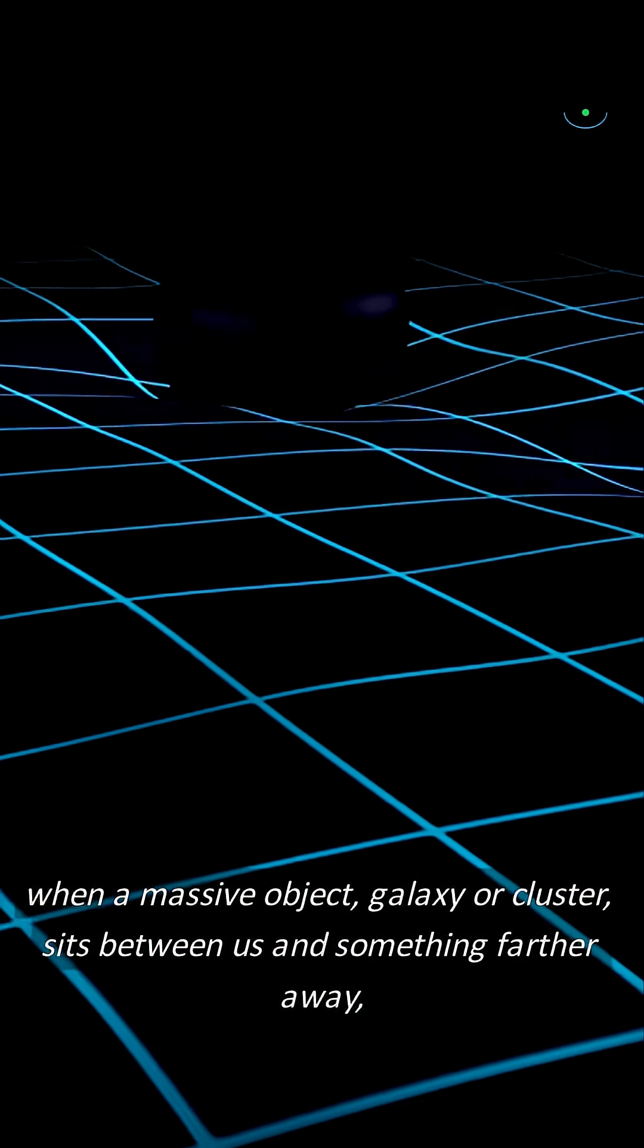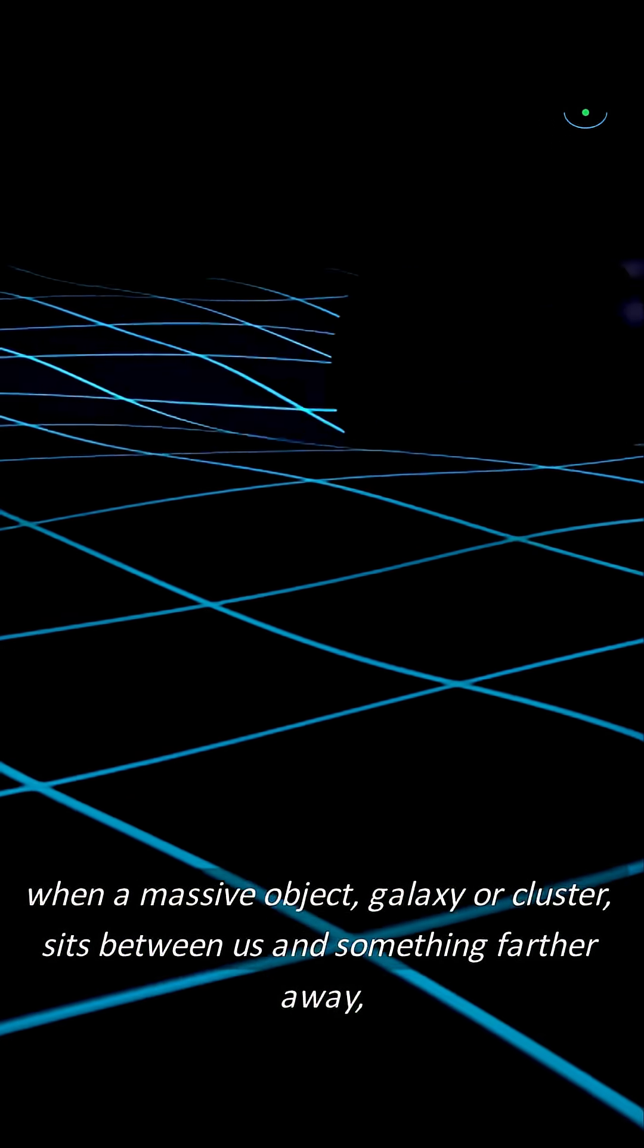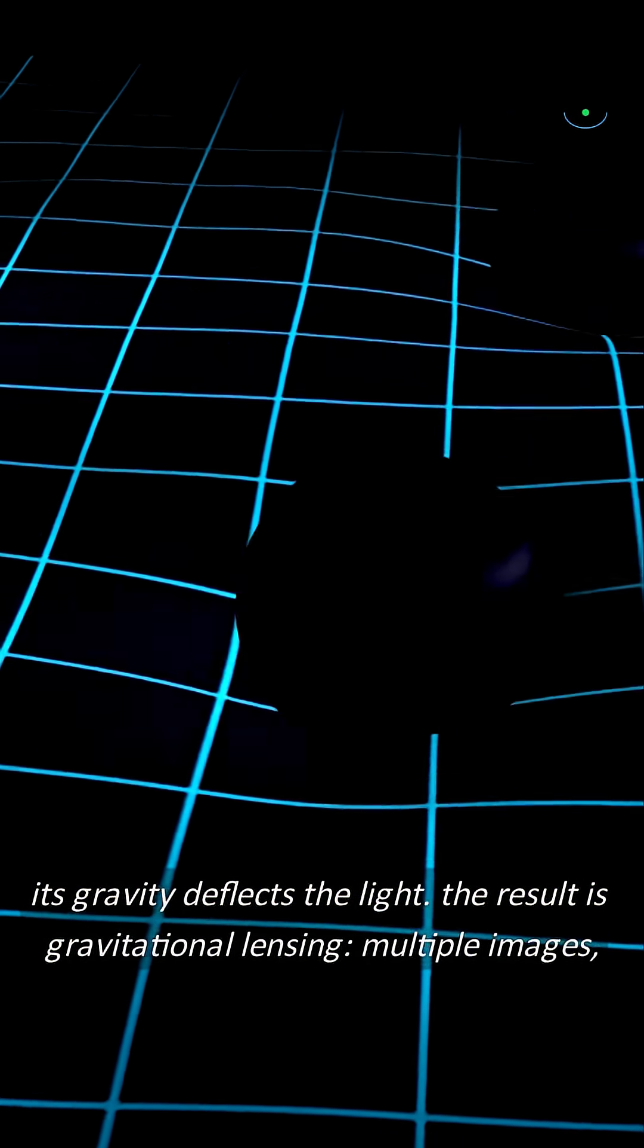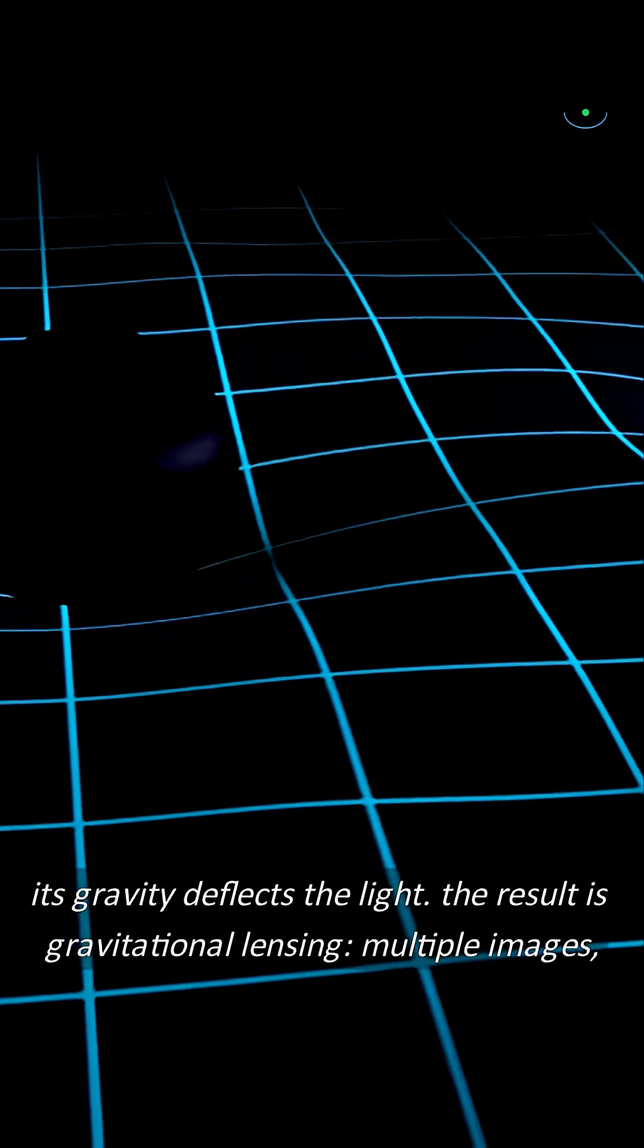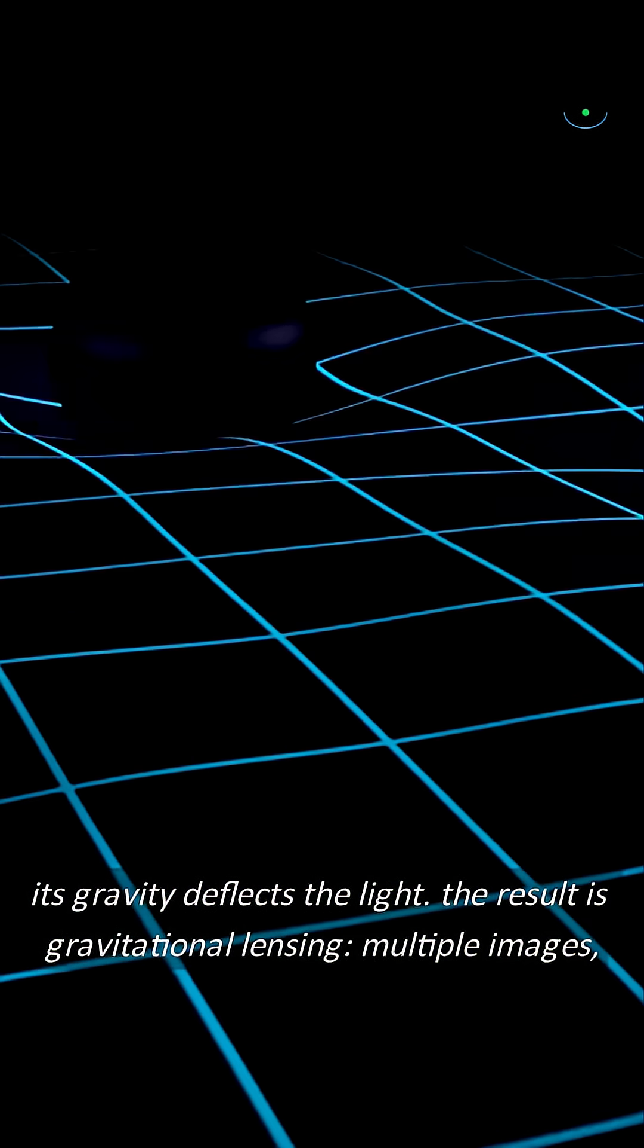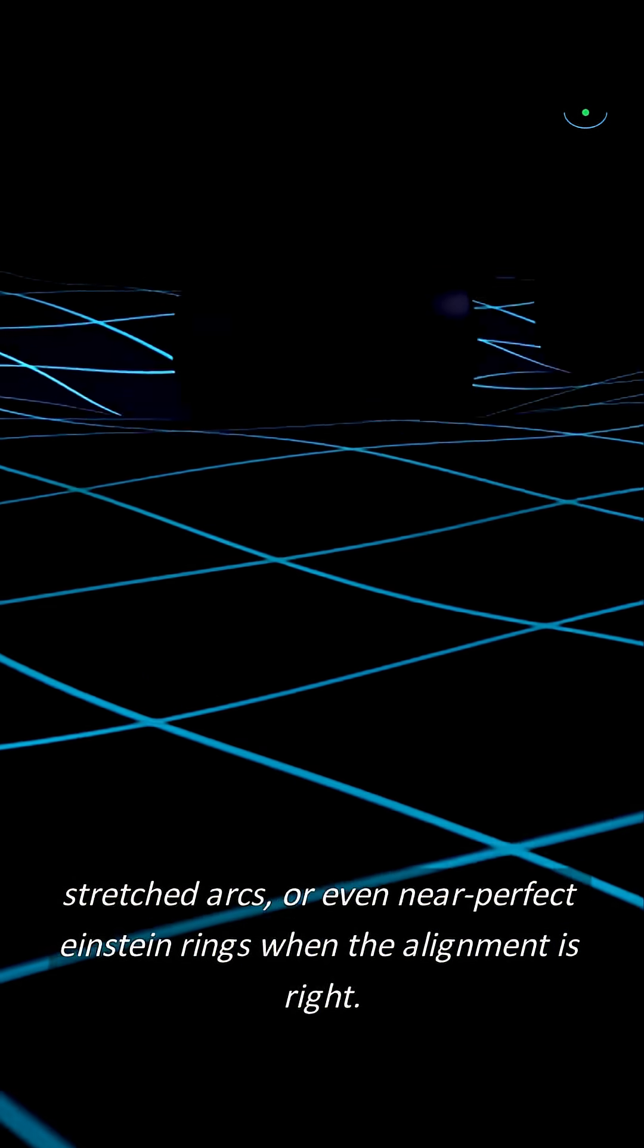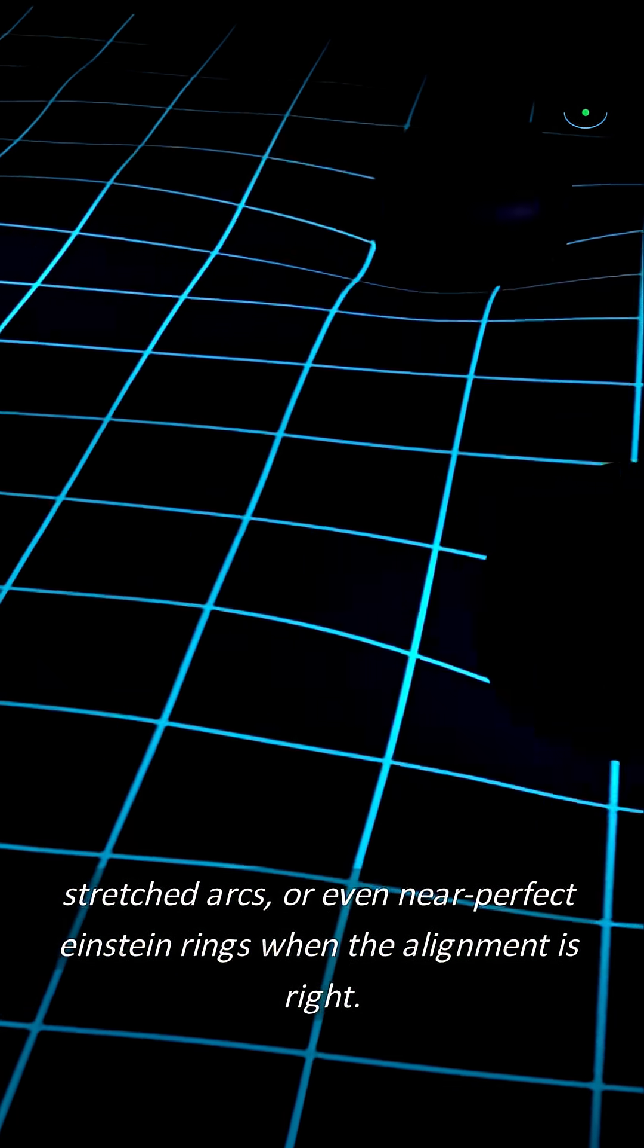When a massive object, galaxy or cluster, sits between us and something farther away, its gravity deflects the light. The result is gravitational lensing: multiple images, stretched arcs, or even near-perfect Einstein rings when the alignment is right.